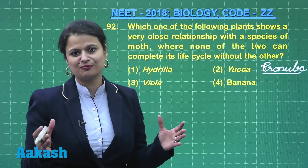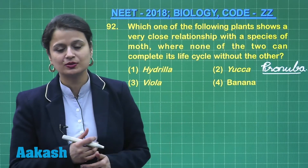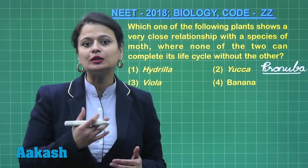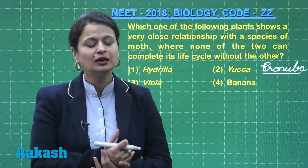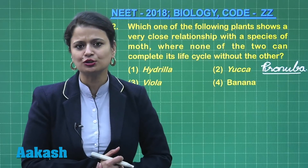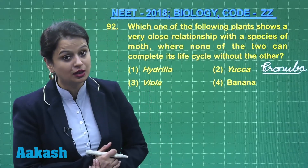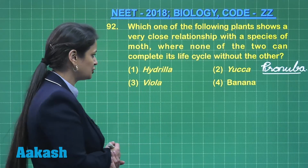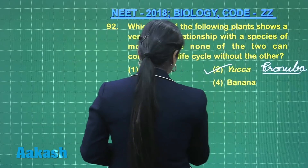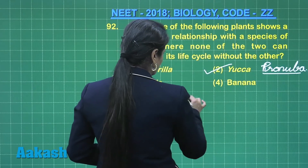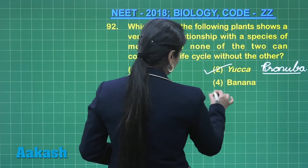Coming to the last one, banana. In the case of banana, there is presence of parthenocarpy, that is formation of fruit without fertilization. So the right answer for this question is option number 2.